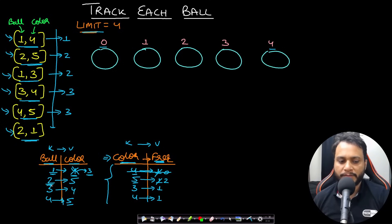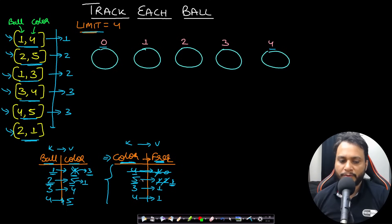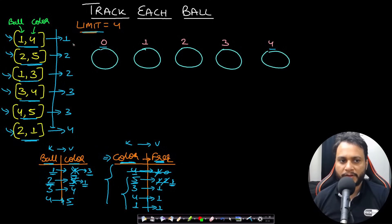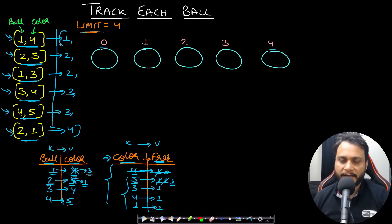For query (2, 1): ball 2 currently has color 5. Go to the color-frequency map, reduce color 5's frequency by 1 — it's still greater than 0 so don't remove it. Update ball 2's color to 1, insert color 1 with frequency 1. Now the color-frequency map has entries for colors 1, 4, 3, and 5 — 4 distinct colors, so return 4. The full result array is [1, 2, 2, 3, 3, 4].